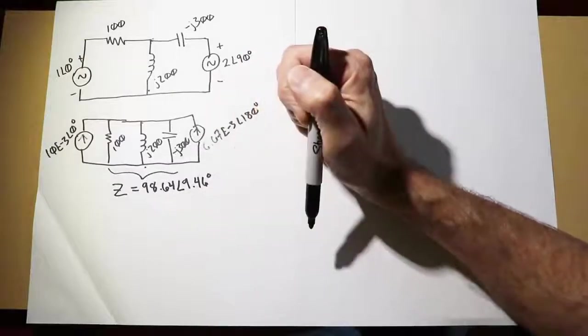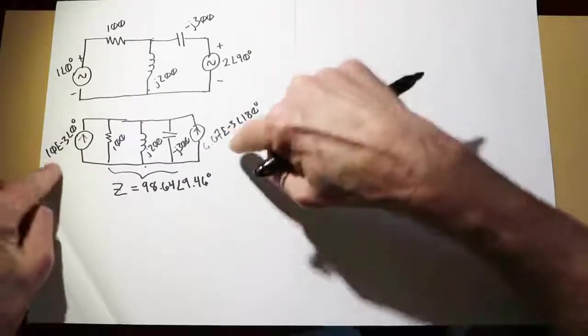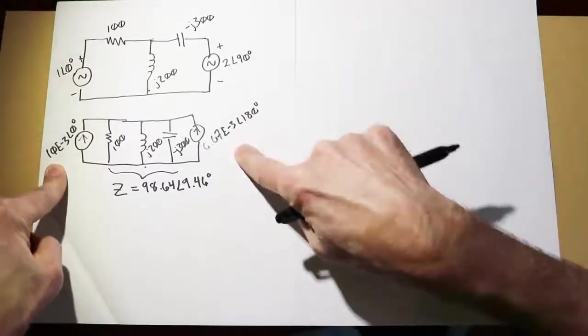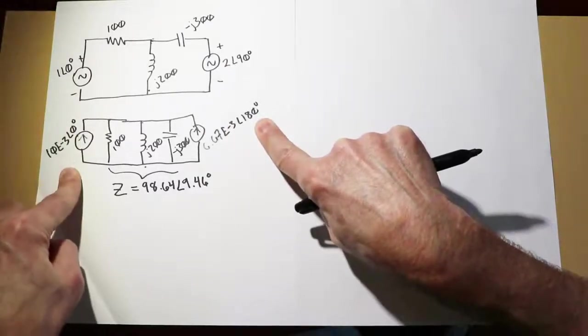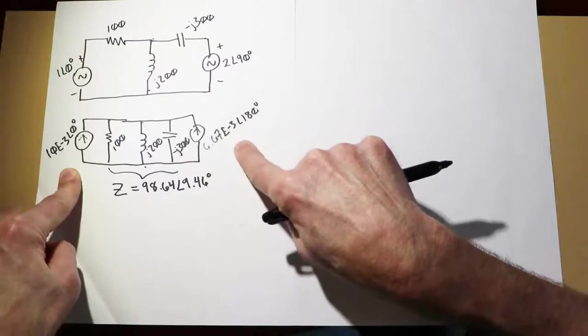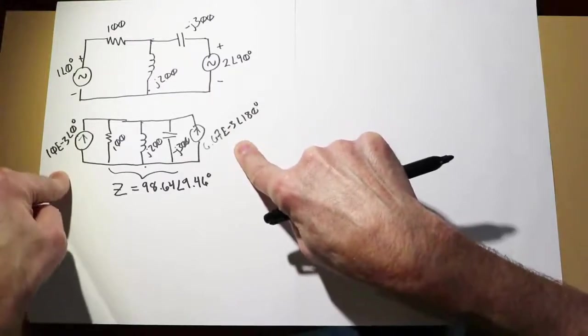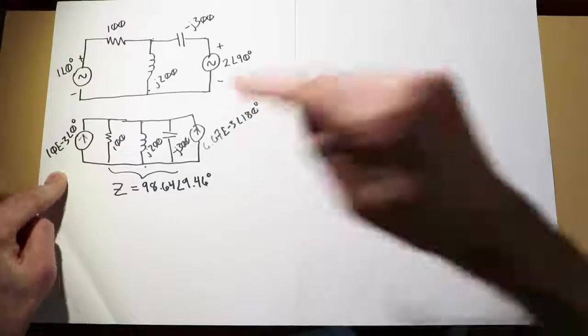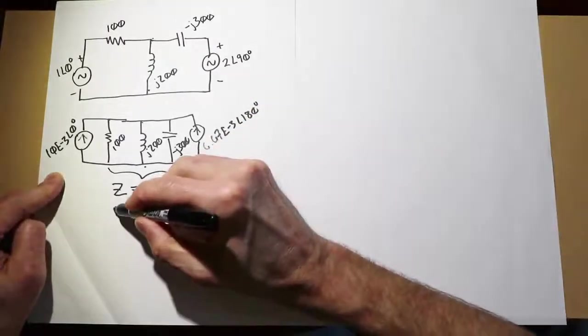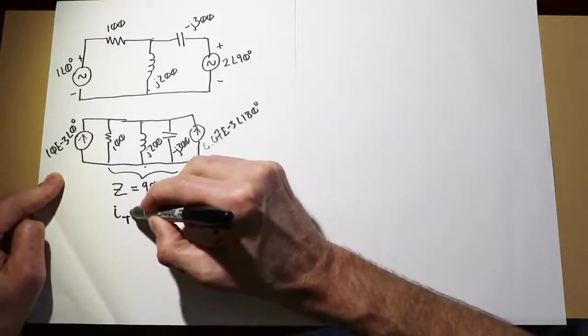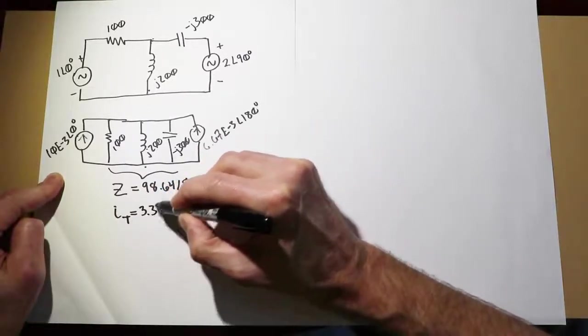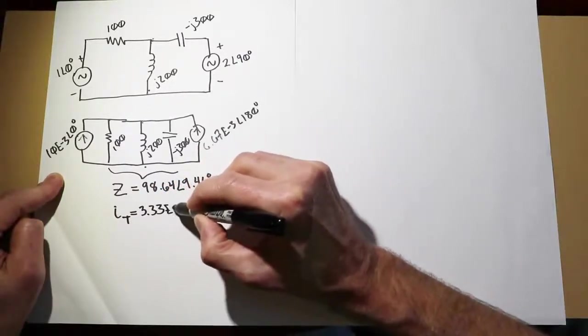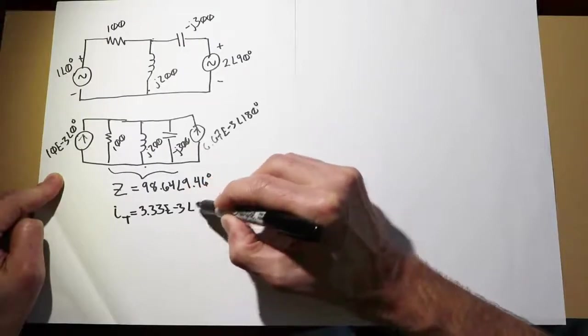The two currents, when they combine, notice that this current source is 180 degrees out of phase with this current source, which means we simply subtract 6.67 milliamps from the 10 milliamp source. That gives us 3.33 milliamps. So our total current will be 3.33 milliamps at an angle of 0 degrees.